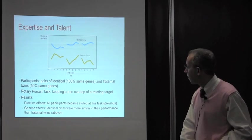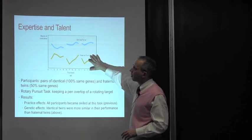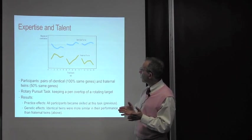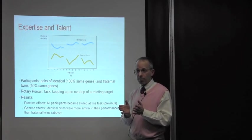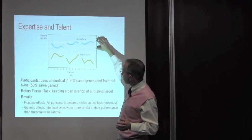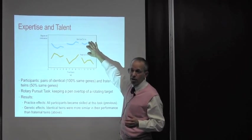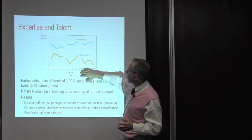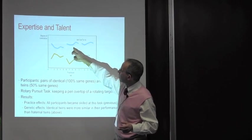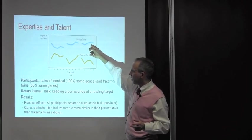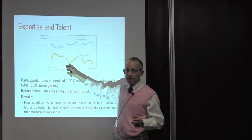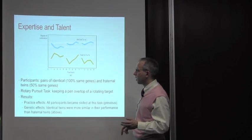What this looks at is the degree of correlation: how similar are people over trials. The identical twins, the higher the correlation, the more similar they are. Over time, there's not that much change in their similarity. As opposed to the fraternal twins, the more they practice, the less similar they are.